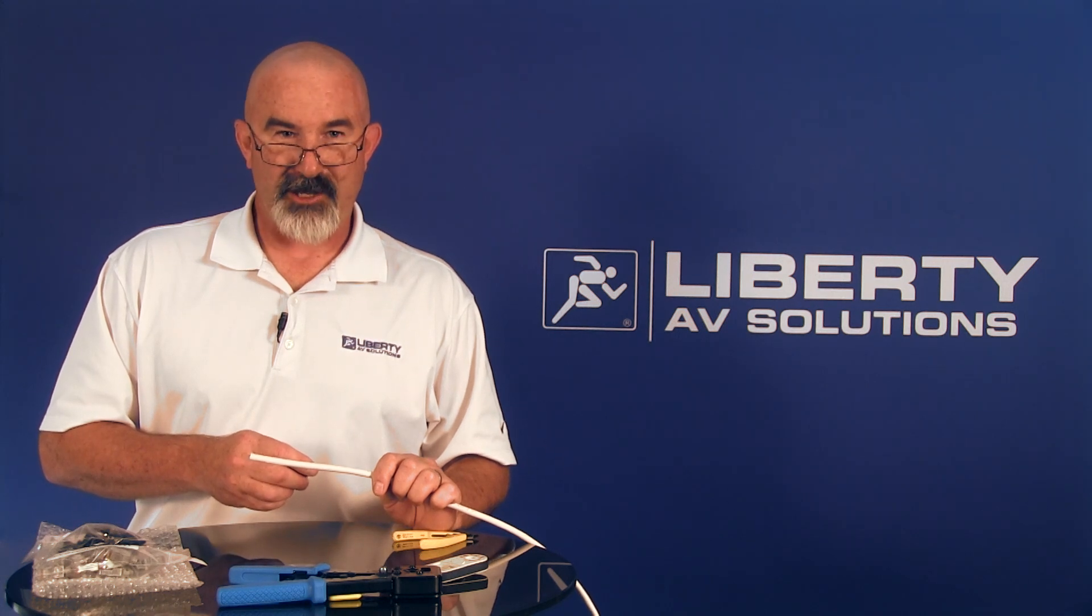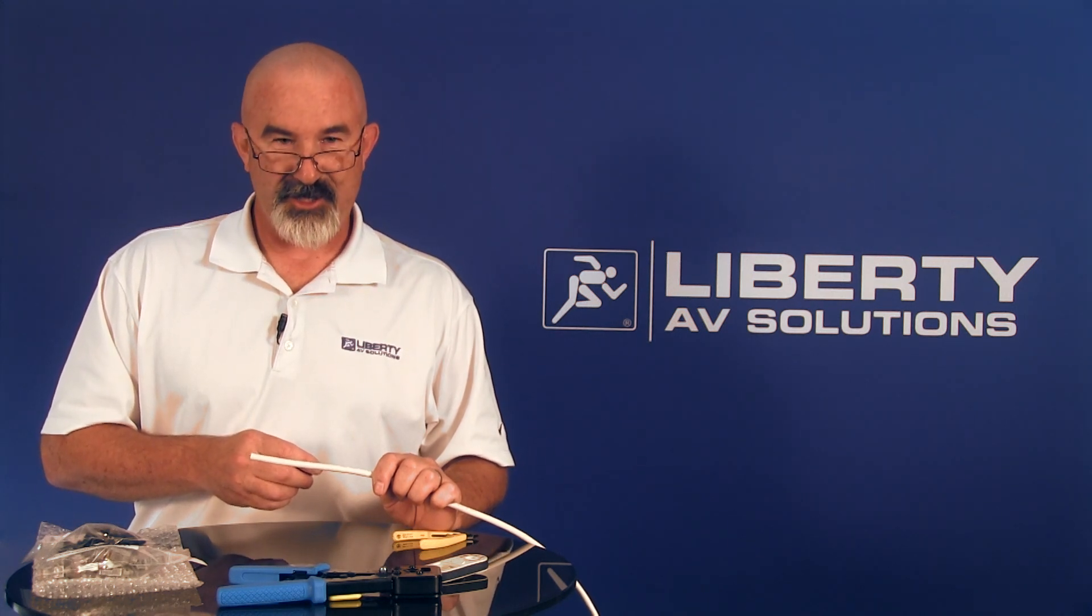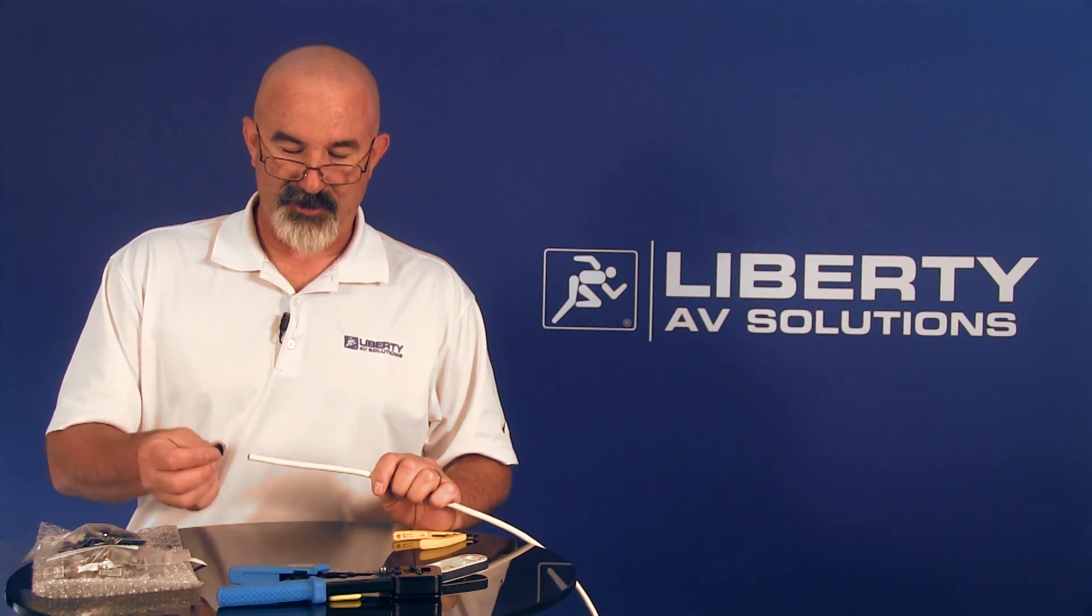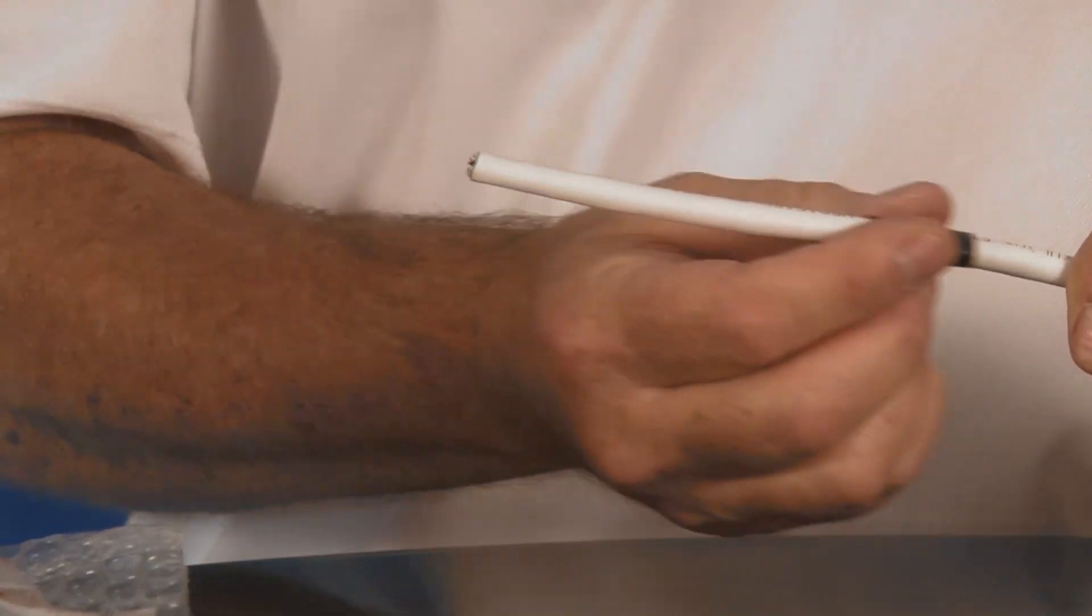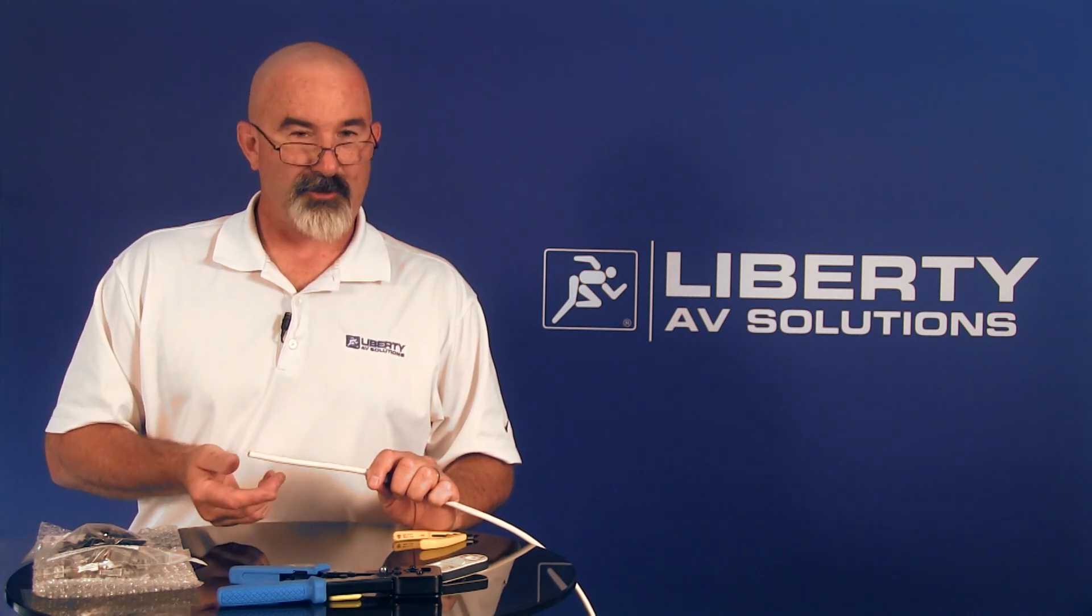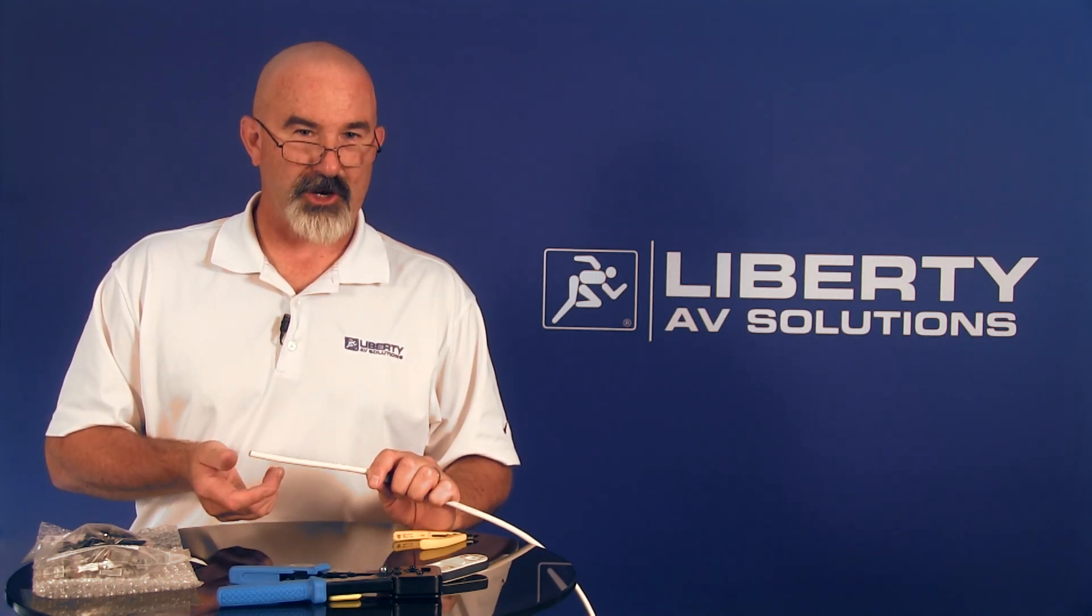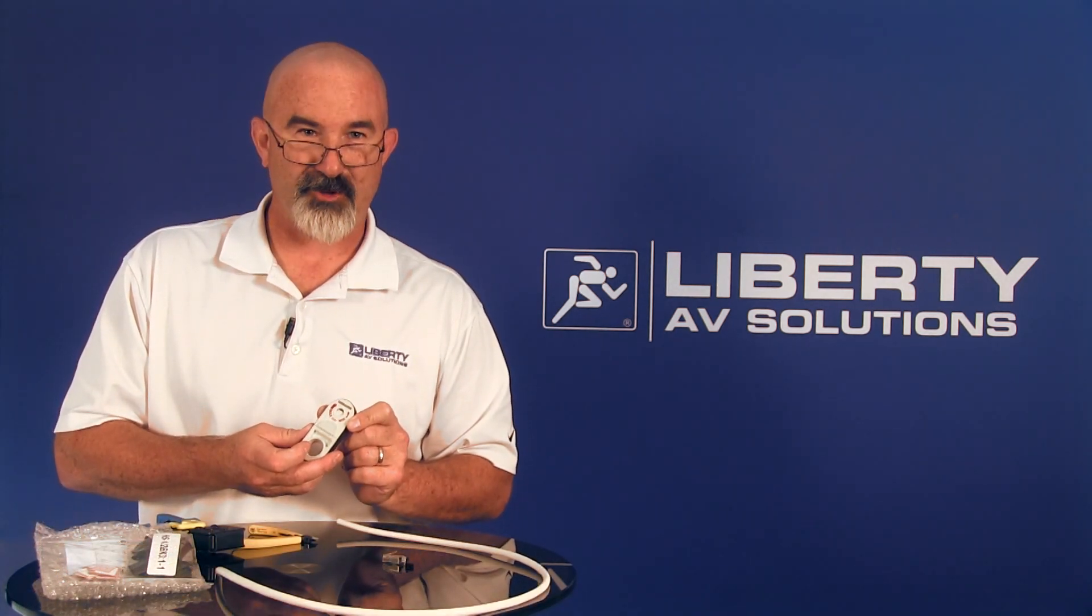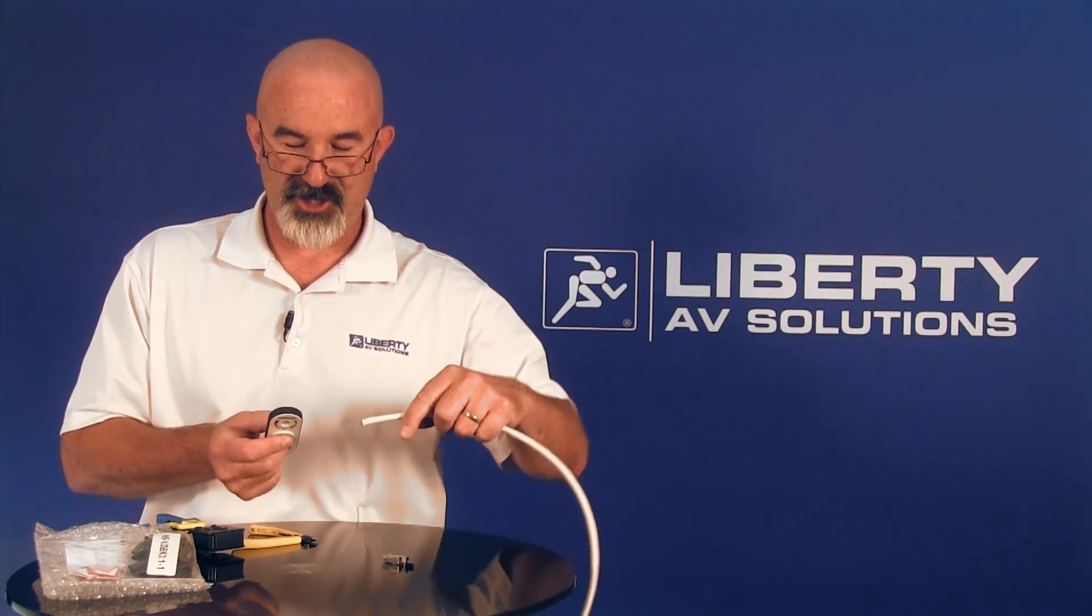The first step of putting any connector on it is to prepare your cable. I always like to say that a properly prepared cable is going to eliminate 90% of any field failures. Because we're doing shrink tubing on this, I want to put the shrink tubing up the cable first. The next step is going to be to strip the cable. I'm going to strip the cable approximately two inches. I'm going to use a strip tool here, a real simple cigar cutter type strip tool. I'm going to go ahead and do two inches of jacket off.